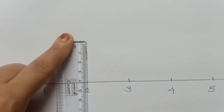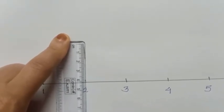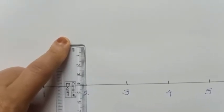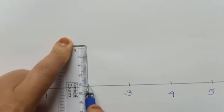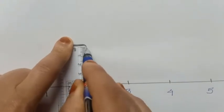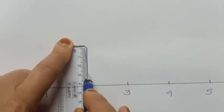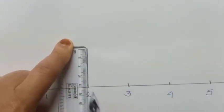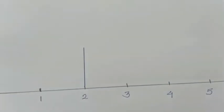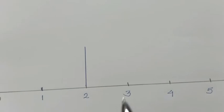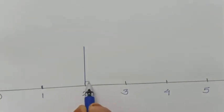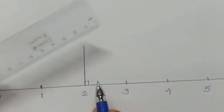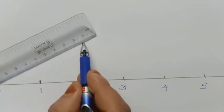We took 4 centimeters equal to 1 unit, so that same distance we are taking for drawing the perpendicular. The perpendicular is also equal to 4 centimeters. Now draw 4 centimeters perpendicular here.